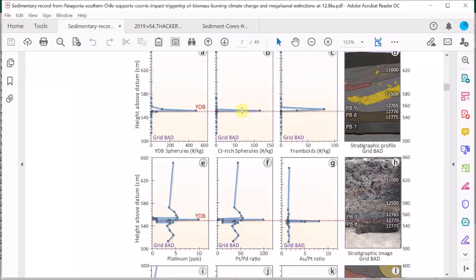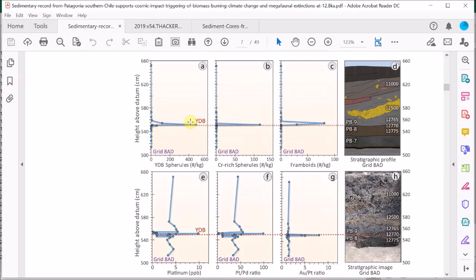So they find impact spherules, microscopic silica and iron-rich spherules with a dendritic surface pattern indicating quenching from a high temperature, and they're found only at the Younger Dryas boundary within the range that they examine.